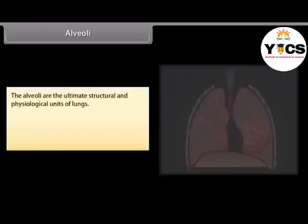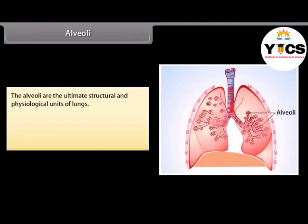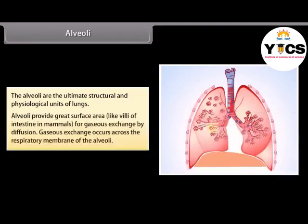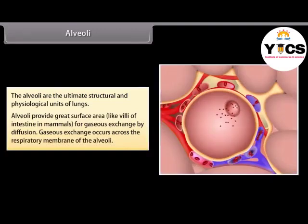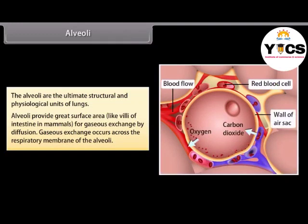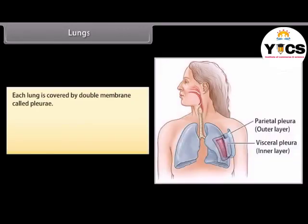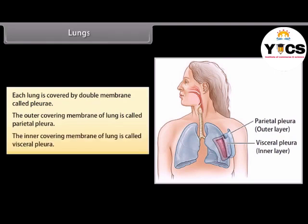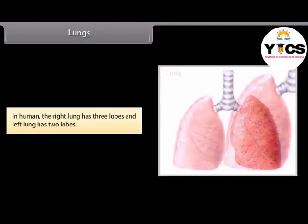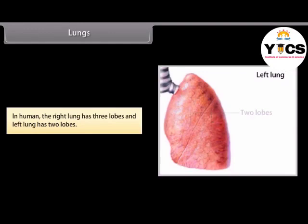The alveoli are the ultimate structural and physiological units of the lungs. Like villi of the intestine in mammals, alveoli provide a great surface area for gas exchange by diffusion. Gas exchange occurs across the respiratory membranes of the alveoli. Each lung is covered by a double membrane called the pleura — the outer covering is called the parietal pleura and the inner covering is called the visceral pleura. In humans, the right lung has three lobes and the left lung has two lobes.